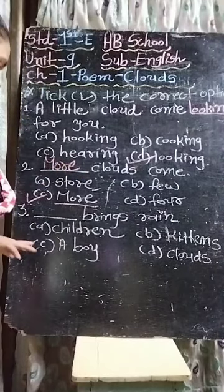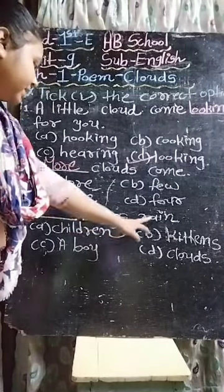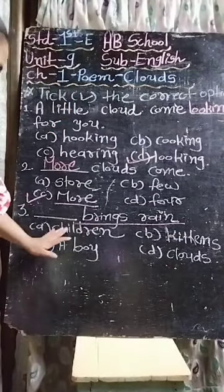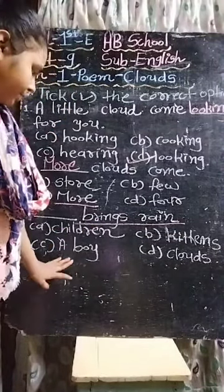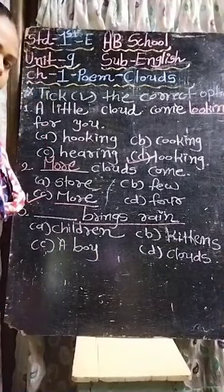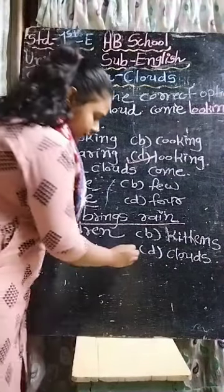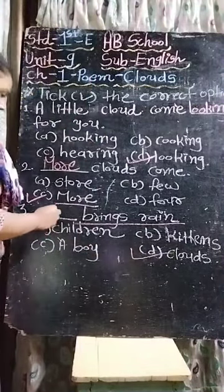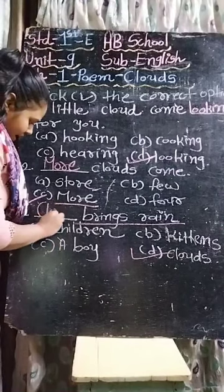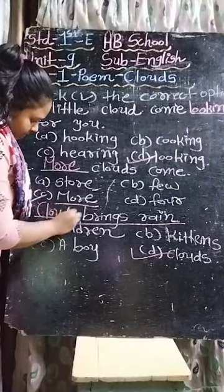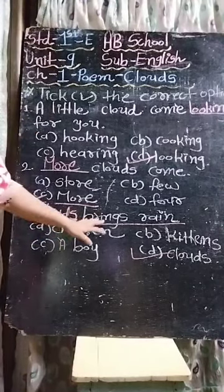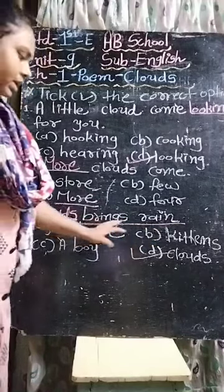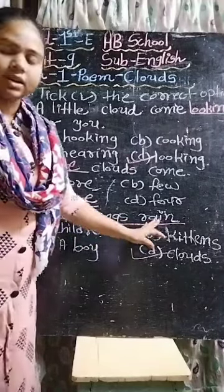Now third one: '___ brings rain.' कौन लाता है - children, kittens, या clouds? Clouds brings rain. क्लाउड्स लाते हैं.